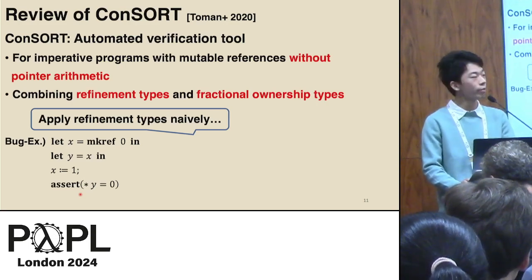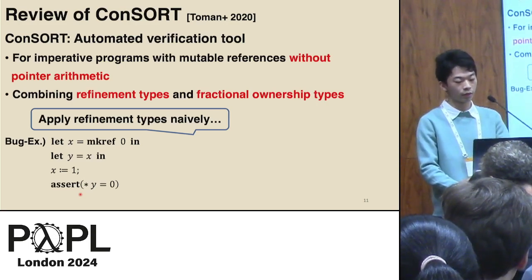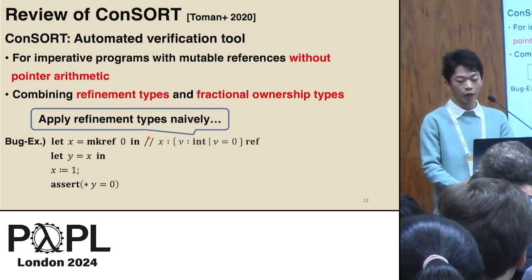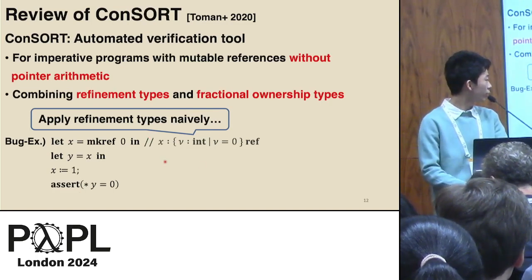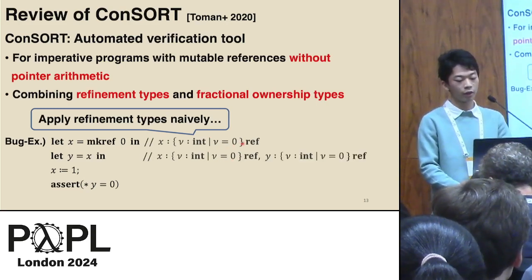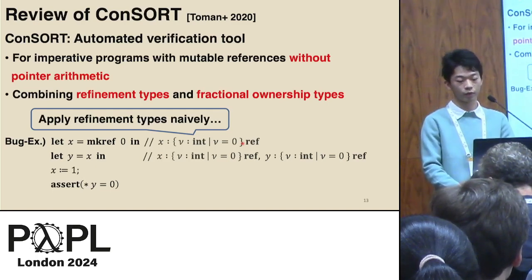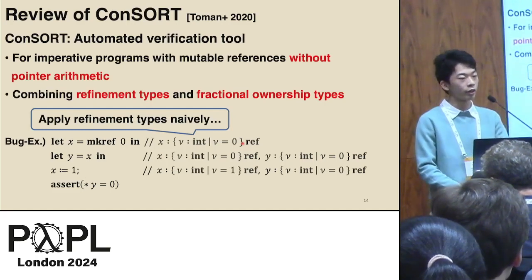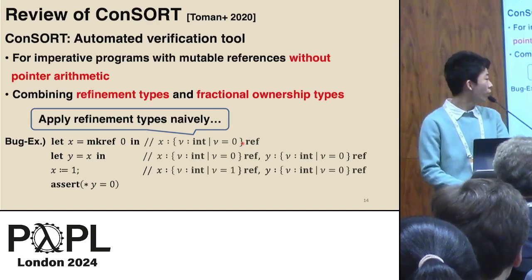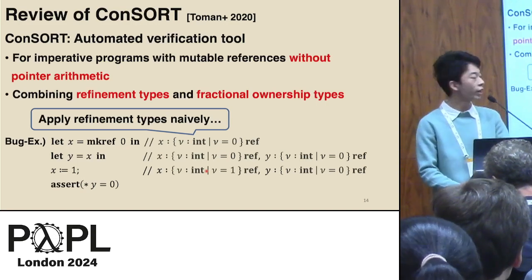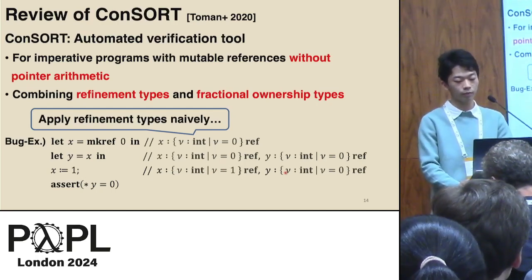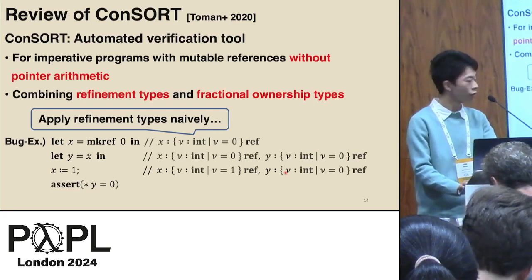If we normally apply refinement types, we may perform the following wrong reasoning. First, on the first line, x is given a type meaning that x is a reference to an integer 0. On the second line, y is given the same type. A problem occurs on the third line: as x is updated to 1, we are tempted to change only the type of x, meaning x is now a reference to the integer 1, and leave the type of y as it is. But that is wrong because y is actually an alias of x, so the type of y should also be updated.